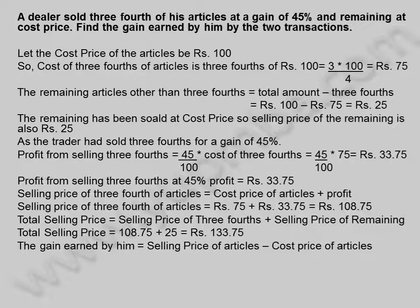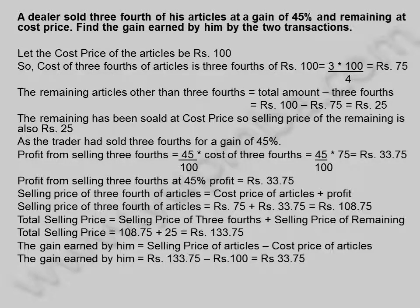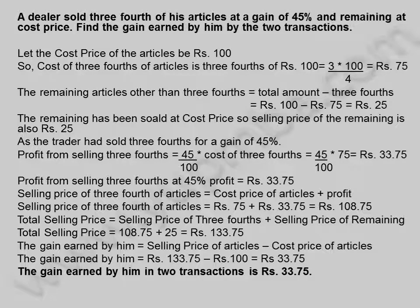The gain earned by him is equal to selling price of articles minus cost price of articles, equal to 133.75 rupees minus 100 rupees, equal to 33.75 rupees. The gain earned by him in two transactions is 33.75 rupees. Let us see another example.